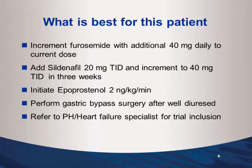You don't initiate epoprostenol because this is not Group 1 disease — it's Group 2. There is not enough strong evidence that PAH-specific therapy really works for these patients. The long-term message is that while diuresis provides temporary relief, this patient's pulmonary hypertension and right ventricular failure will actually make them die sooner than a comparable patient without pulmonary hypertension.